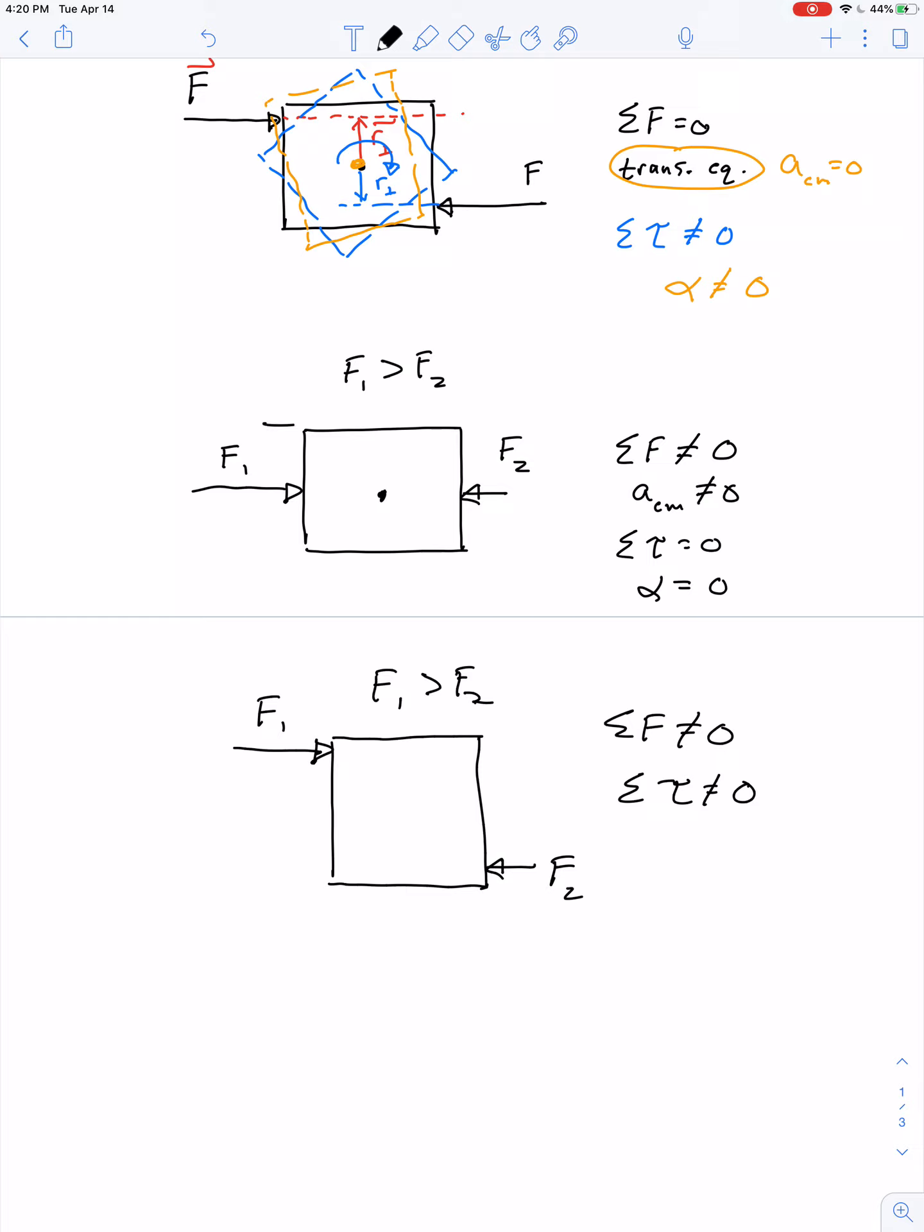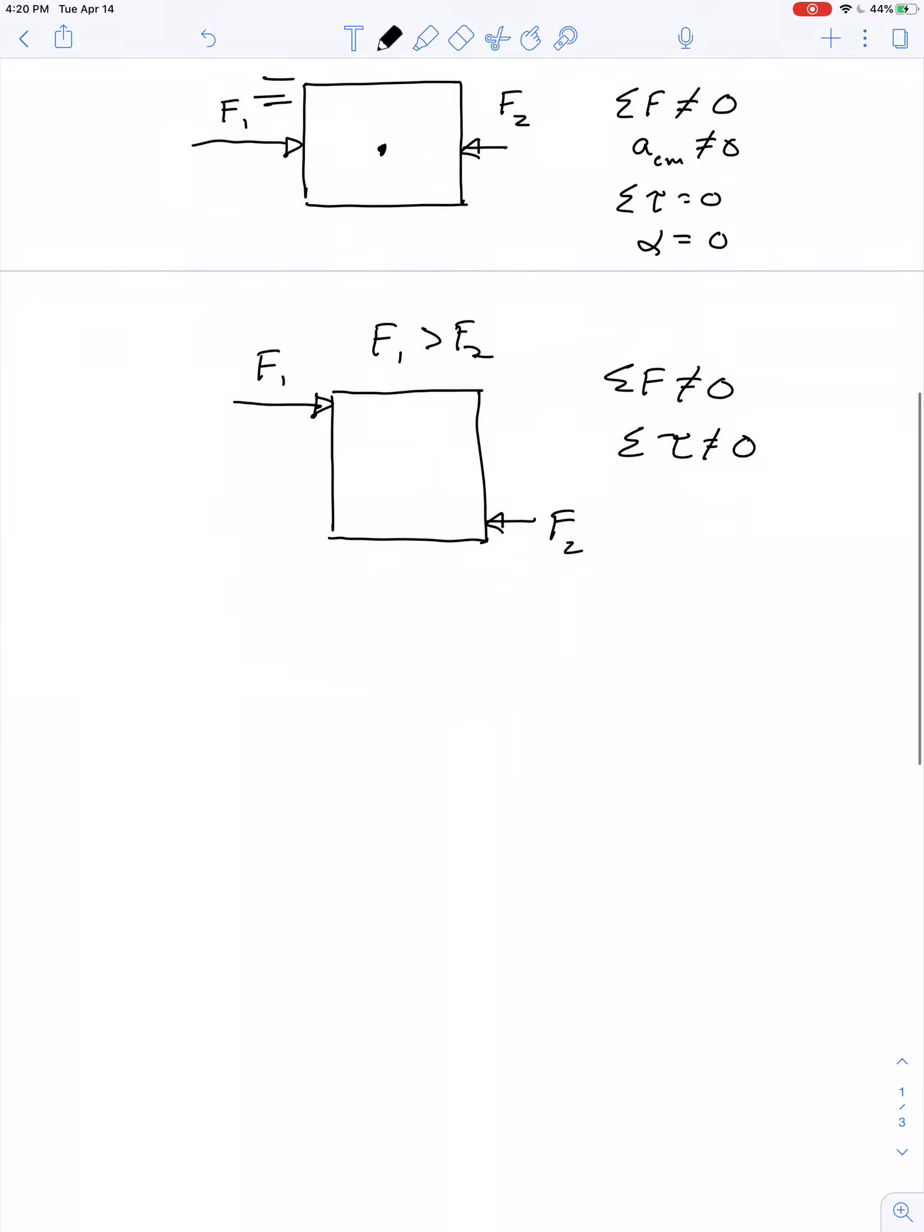This object would definitely be accelerating to the right. And in our final case, this object is going to accelerate to the right. And it's also going to have an angular acceleration in a clockwise direction. So this object is going to rotate as it translates through space.